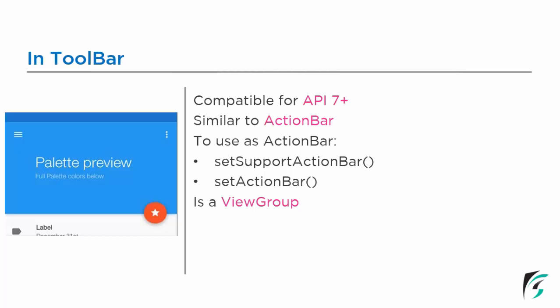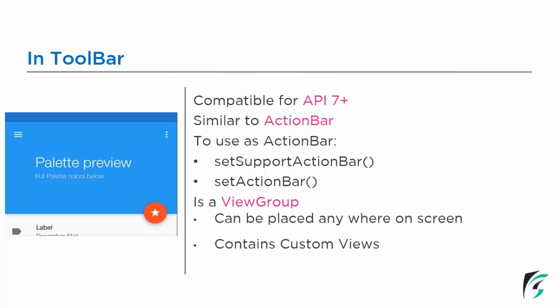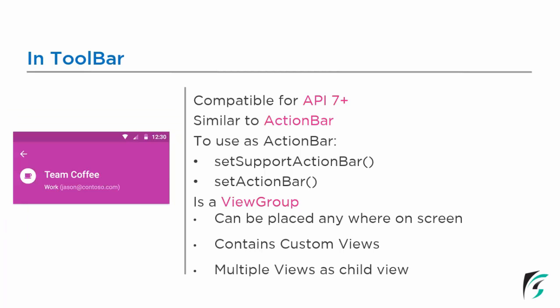Another important feature about the toolbar is that it is a view group. A view group can have its own layout and can be placed anywhere on the screen. There may be multiple views within the view group. It has its own layout and there may be custom layouts inside the view group. The view group contains custom views and there may be multiple views as the child view. In this image on the left side, we can see there is a navigation icon on the top and the title and subtitle are having the vertical linear layout. Similarly, we can have the relative layout in our toolbar and place the desired icons as per our requirement.